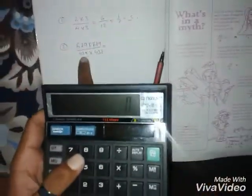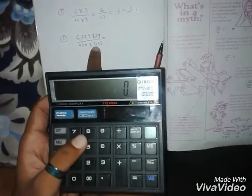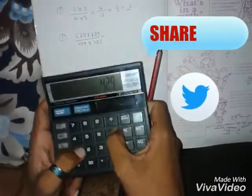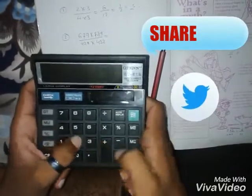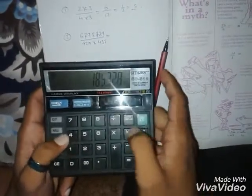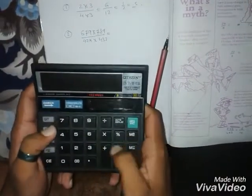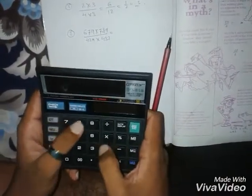So let me see. First, denominator: 429 into 432, M plus. Then the next numbers: 679 into 789.